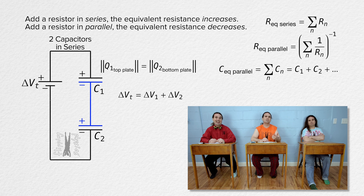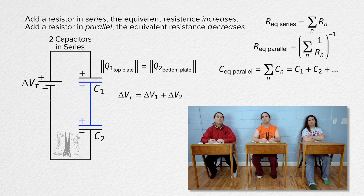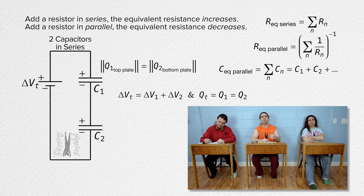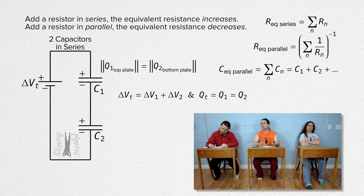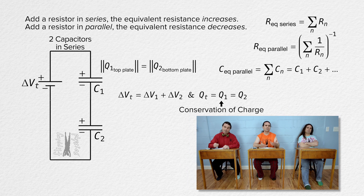That means the charges on all the plates of those capacitors are equal in magnitude. In other words, the total charge moved by the battery equals the charge on capacitor 1, which equals the charge on capacitor 2. That's basically just conservation of charge.